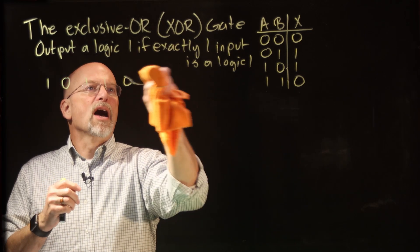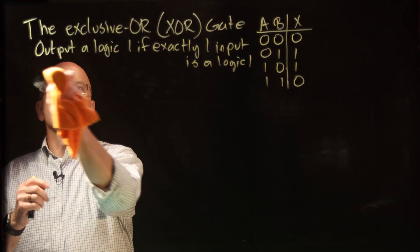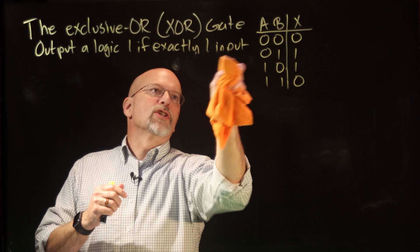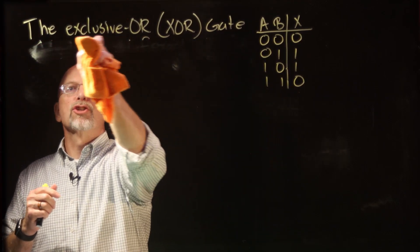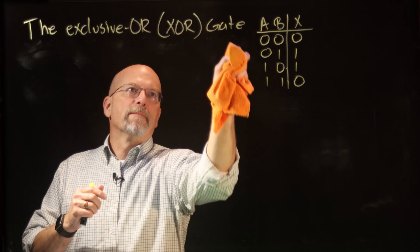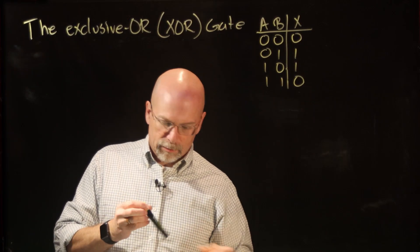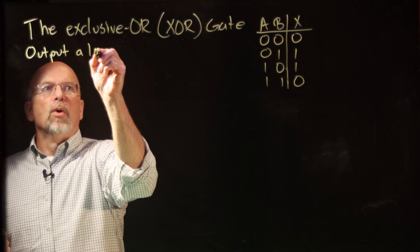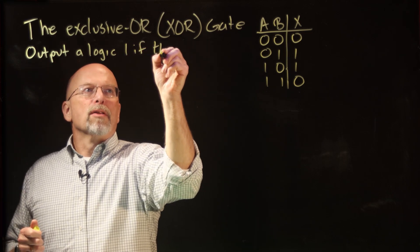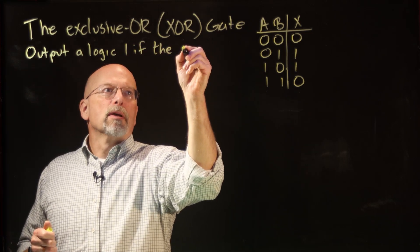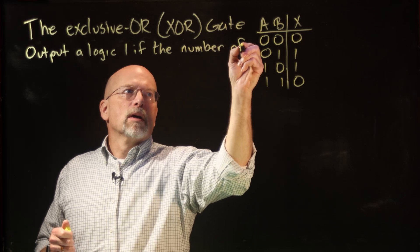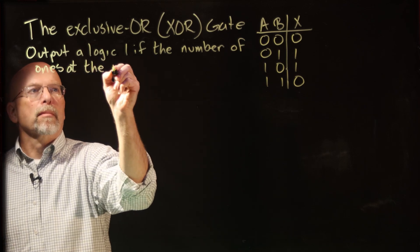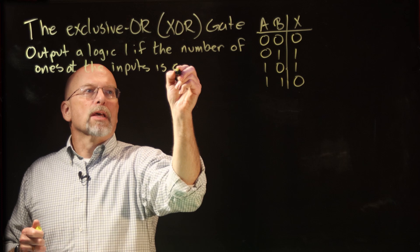So this gives us another definition of the exclusive-OR. This other definition I'm going to use if we have more than two inputs to our exclusive-OR gate. The definition goes like this: output a logic 1 if the number of 1s at the inputs is an odd number.